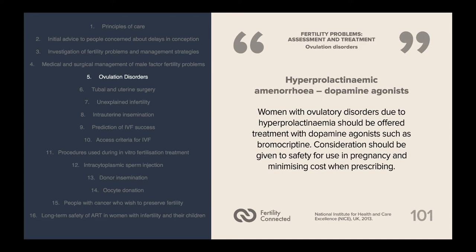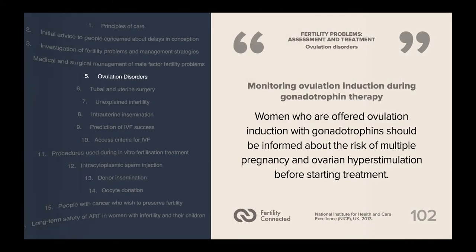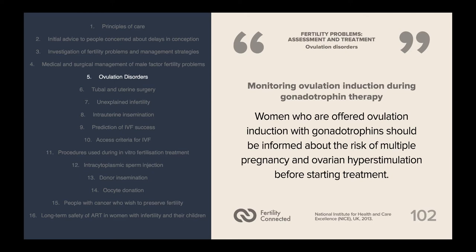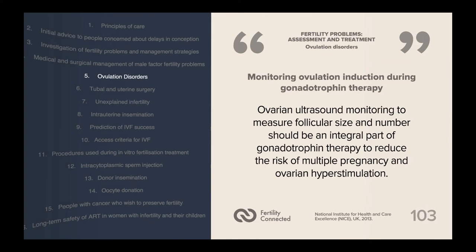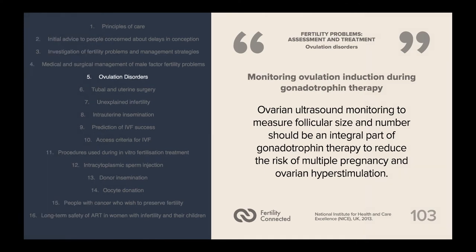Hyperprolactinaemic amenorrhoea should also be considered as it can contribute to infertility. Women with ovulatory disorders due to hyperprolactinaemia should be offered treatment with dopamine agonists such as bromocryptine, with consideration given to safety in pregnancy and minimising cost. Women offered ovulation induction with gonadotrophins should be informed about the risk of multiple pregnancy and ovarian hyperstimulation before starting treatment. Ovarian ultrasound monitoring to measure follicular size and numbers should be an integral part of gonadotrophin therapy.